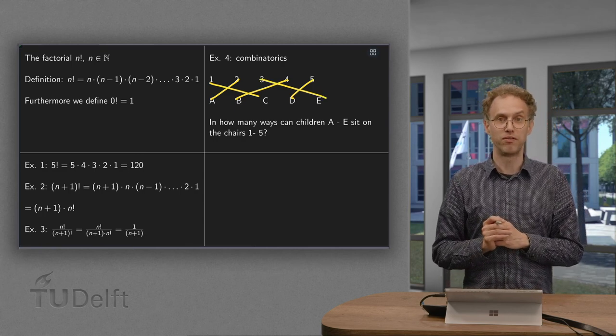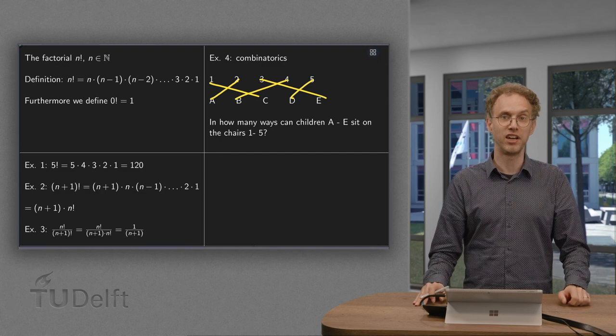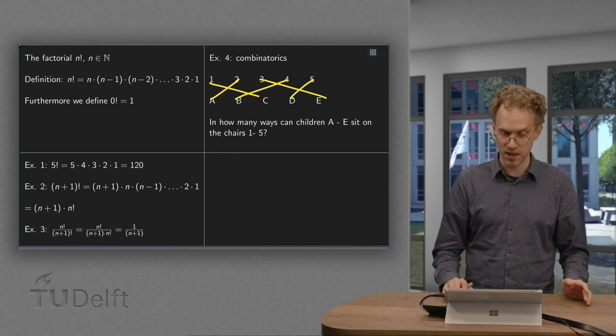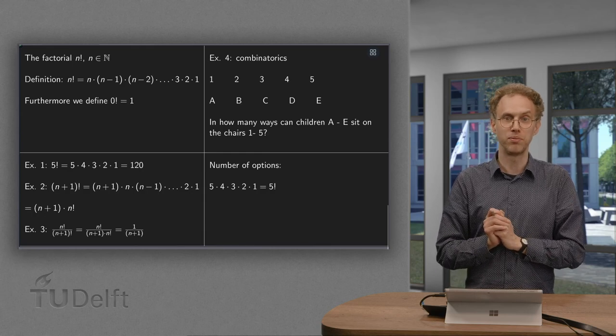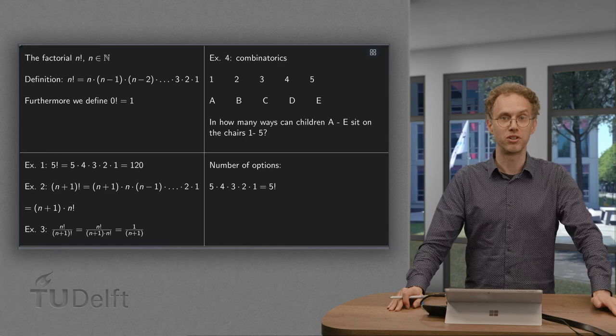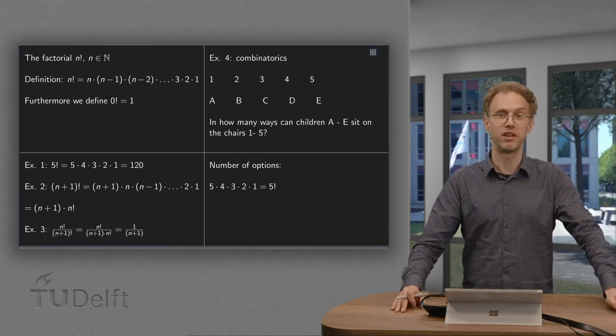So the total number of options would be 5 factorial. And that is why you see those factorials often pop up when you are doing combinatorics.